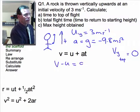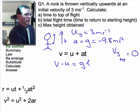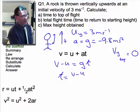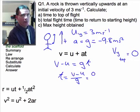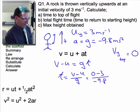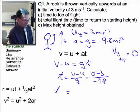So v minus u equals, well, a is gonna be g because it's falling under gravity. So therefore my time is gonna be v minus u on g, which is going to be zero minus three on minus 9.8.